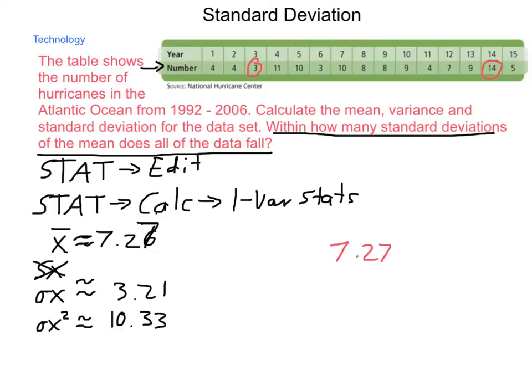In order to get out to the extremes of 3 and 14, what we're going to do is we're going to subtract these values and divide by our standard deviation. So, we have 4.27 divided by 3.21 giving us a total of 1.3 standard deviations.